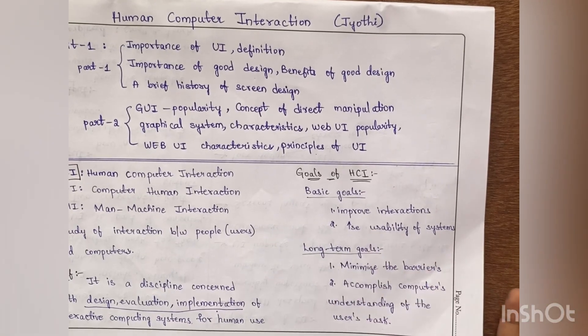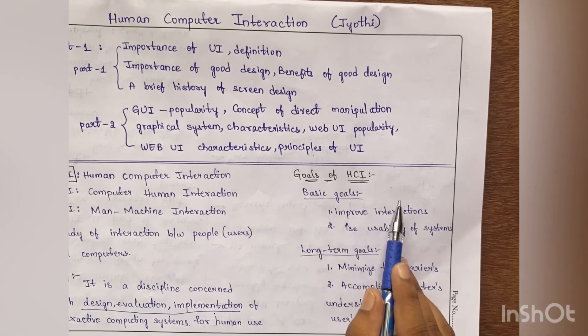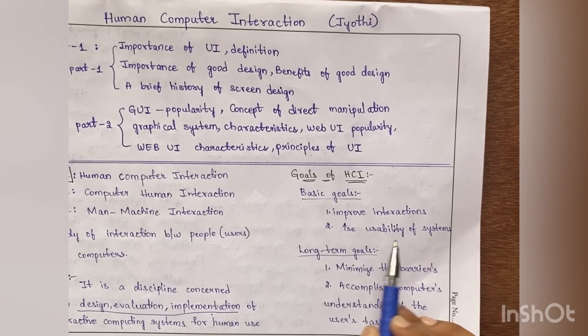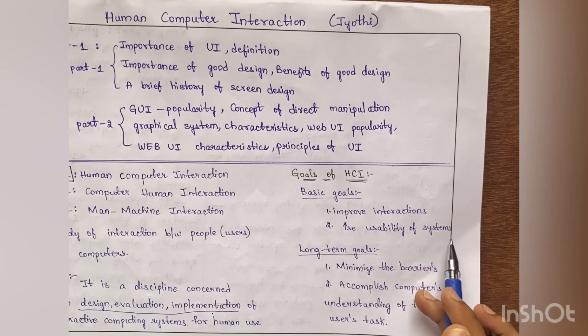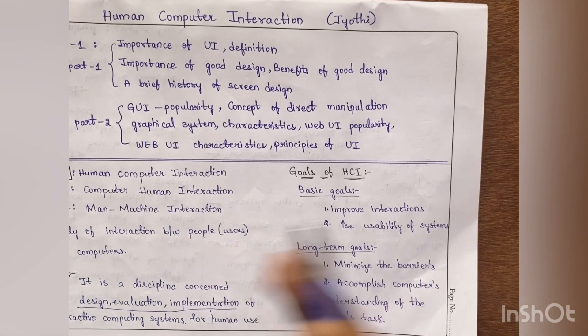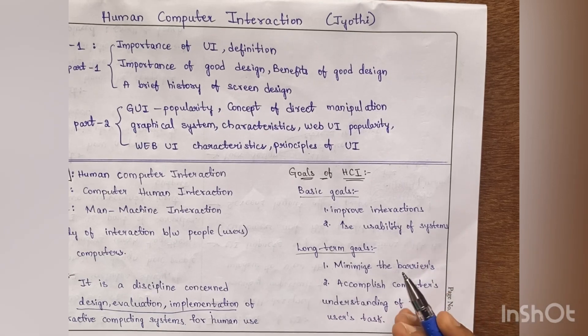Then what are the goals of this HCI? The basic goals are we need to improve the interactions between the computers and the users, and also we need to increase the usability of systems. Few people don't know how to use these things, so because of this HCI the usability should be increased.